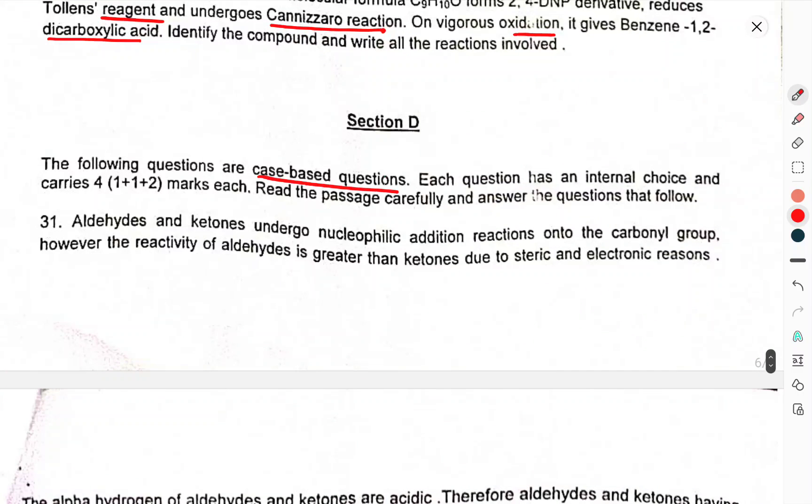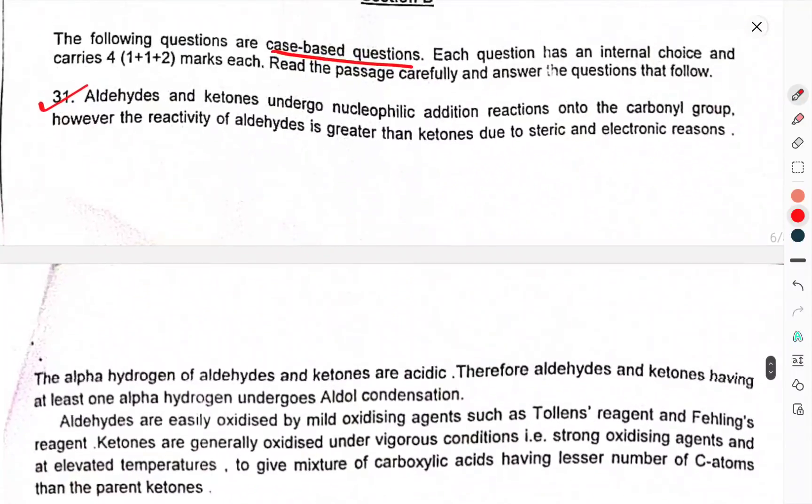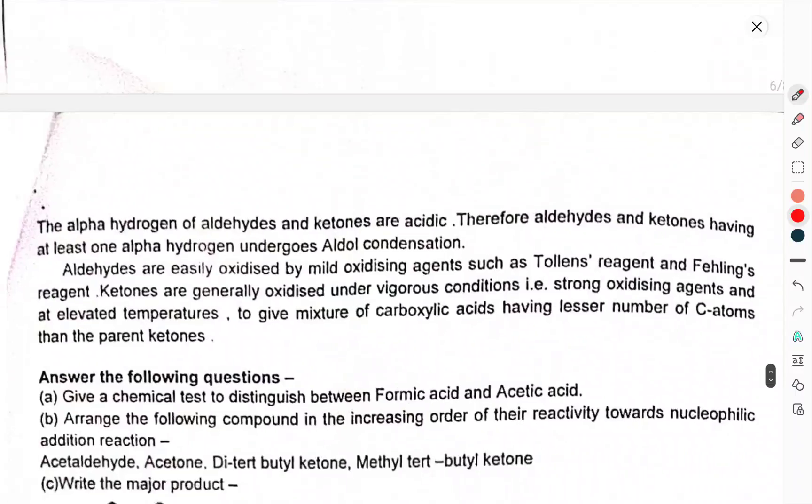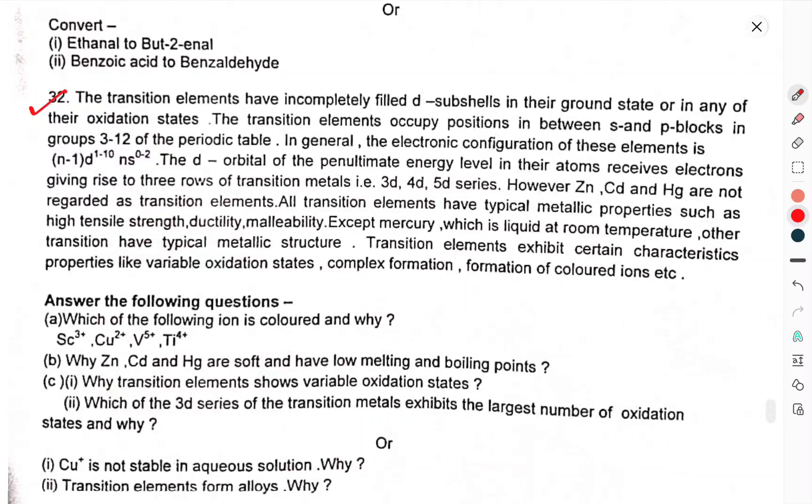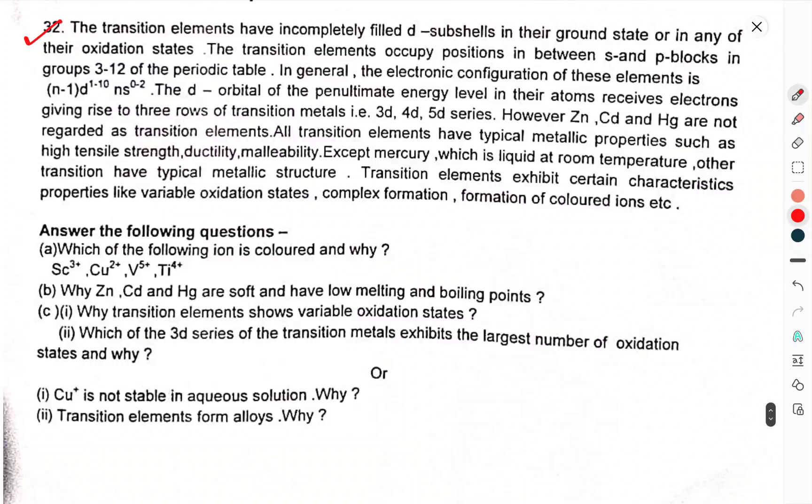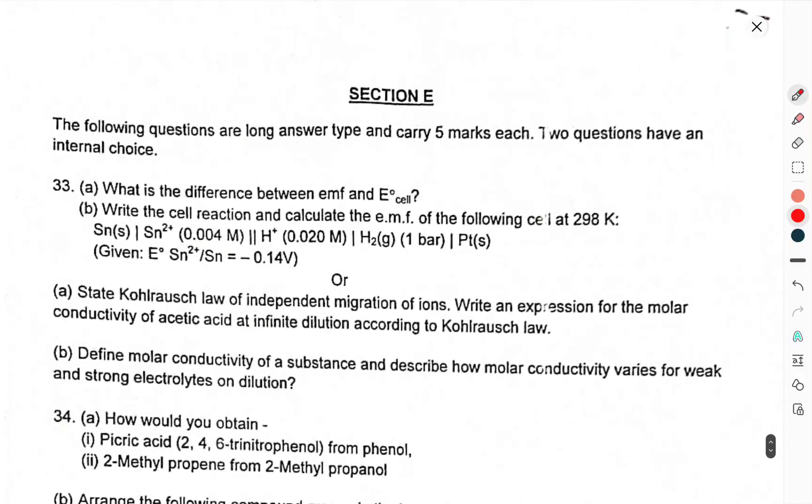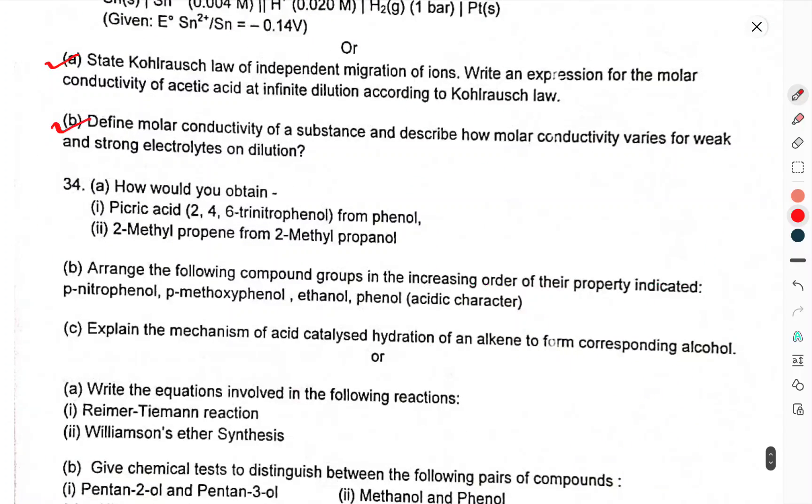Question 31 continued: You have to read it yourself - what is the difference between EMF and E⁰cell. The cell reaction, calculate the EMF of the following cell at 298K. State Kohlrausch's law of independent migration of ions. Write an expression for molar conductivity of acetic acid at infinite dilution according to Kohlrausch's law. Define molar conductivity of a substance and describe how molar conductivity varies for weak and strong electrolytes on dilution.